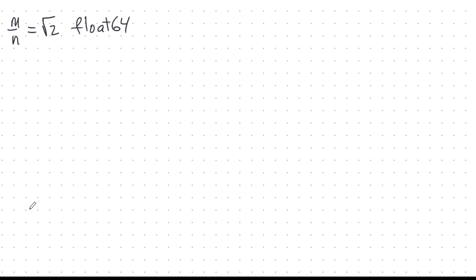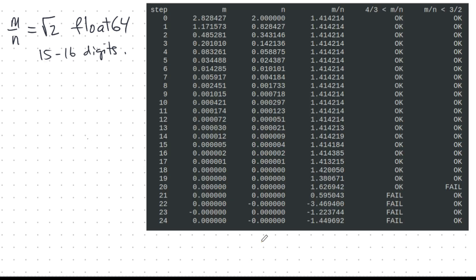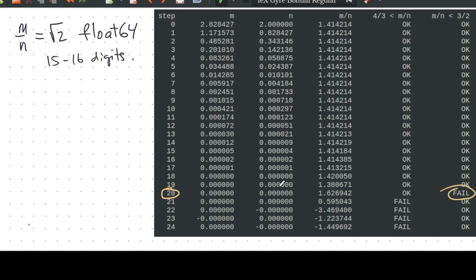One last one. I'm going to take M over N to be a floating point number — float 64 — so that's about 15 to 16 digits of accuracy. This is the best I can do with a normal computer program without using big floats and things like that. It lasted longer, but not that much longer — the wheels came off the wagon on step 20. I merrily tried to do these constructions thinking I'd go all the way to infinity, but no, the ghostly hand stopped me and derailed my construction, just like I thought it would.